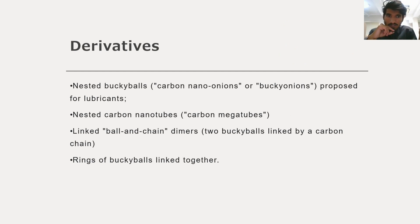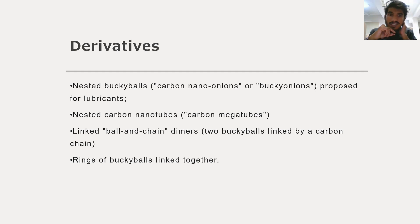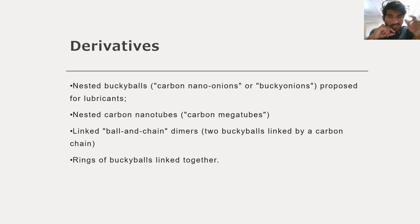Moving on to derivatives of the fullerene: we have nested buckyballs, also called carbon nano-onions or bucky-onions, proposed for use as lubricants. We have nested carbon nanotubes, known as carbon megatubes. We also have linked ball-and-chain dimers and rings of buckyballs linked together. These are all derivatives of the fullerenes.